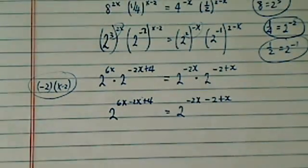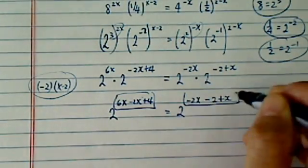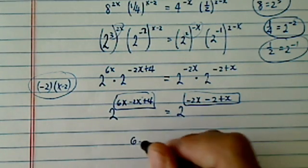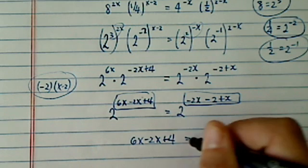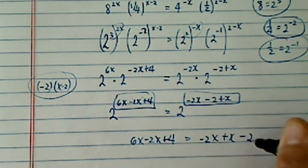Because they are the same base, I can equate the exponents. So 6x minus 2x plus 4 equals minus 2x plus x minus 2.